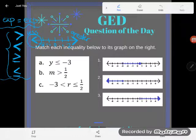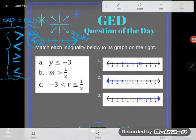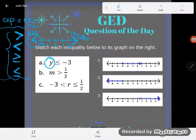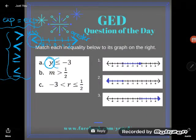Okay, now let's match each inequality below to the graph on the right. This one says y. Now I don't know what y is, but I know something about y: y has to be less than or equal to negative three.